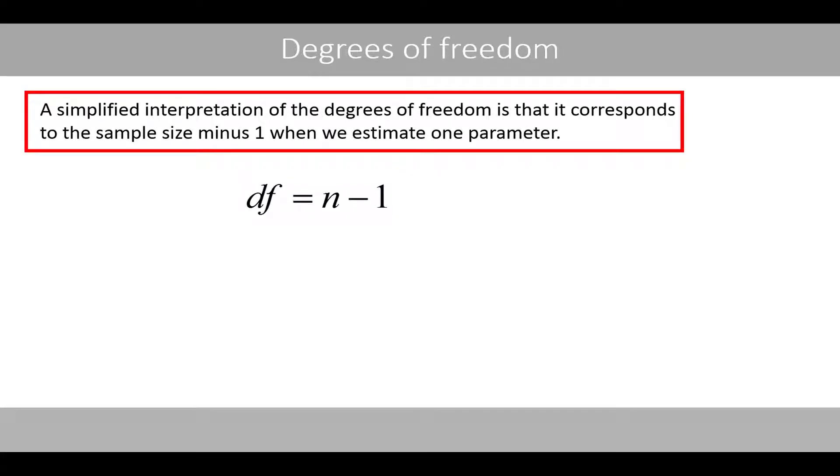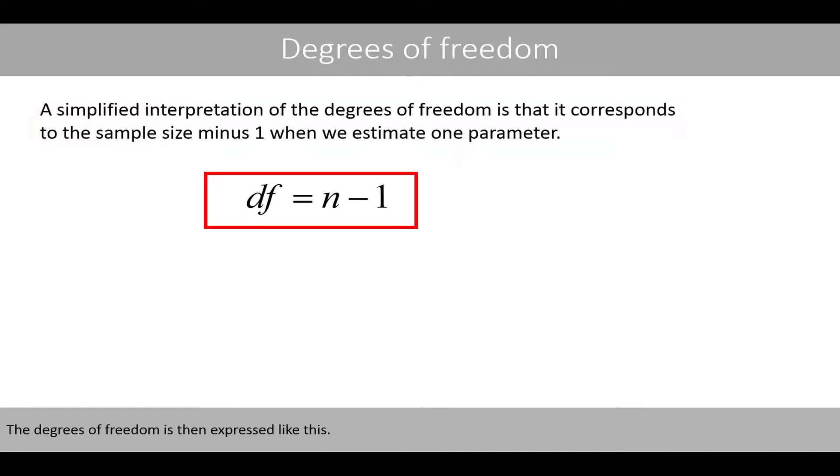A simplified interpretation of the degrees of freedom is that it corresponds to the sample size minus 1 when we estimate one parameter. The degrees of freedom is then expressed like this.